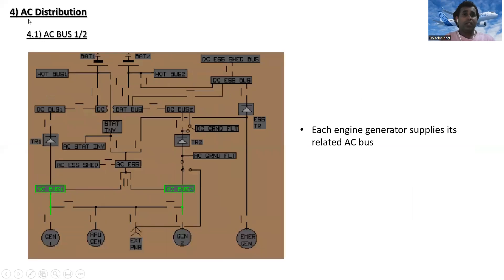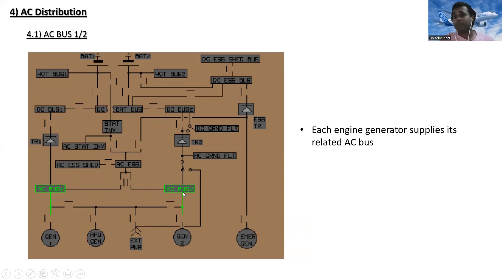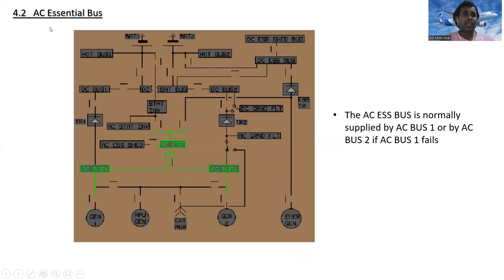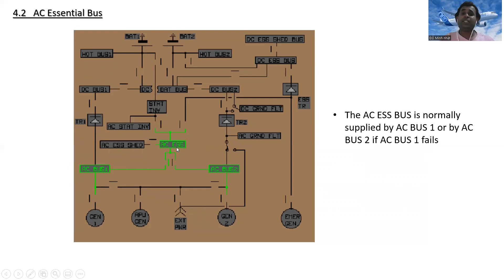For AC distribution, each engine generator supplies its related AC bus — generator one supplies AC bus one, and generator two supplies AC bus two. The AC essential bus is normally supplied by AC bus one, or by AC bus two if AC bus one fails.